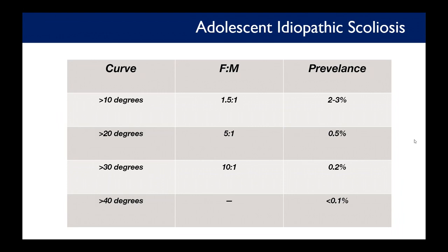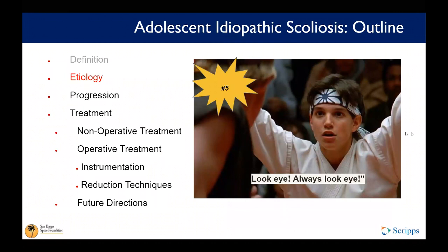Curves between 20 and 30 degrees are much less common — about 0.5% prevalence — with a 5-to-1 female-to-male ratio. As curves get bigger, prevalence goes down and the female-to-male ratio rises significantly. In curves greater than 30 degrees, it's a 10-to-1 female-to-male ratio.